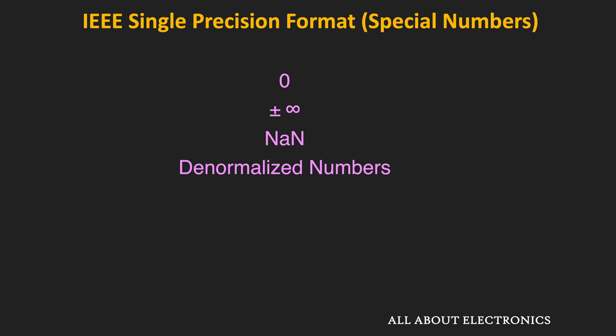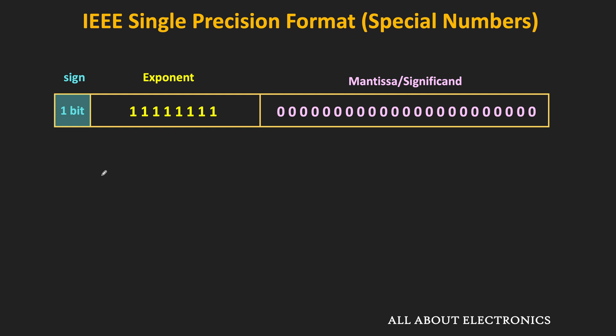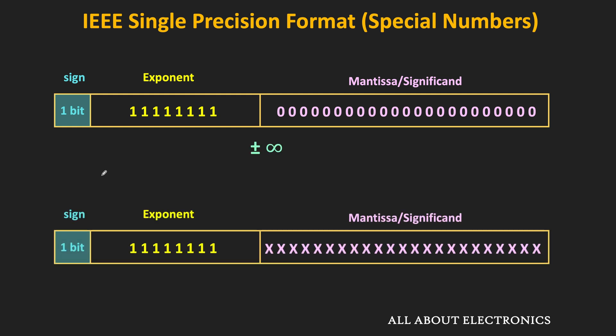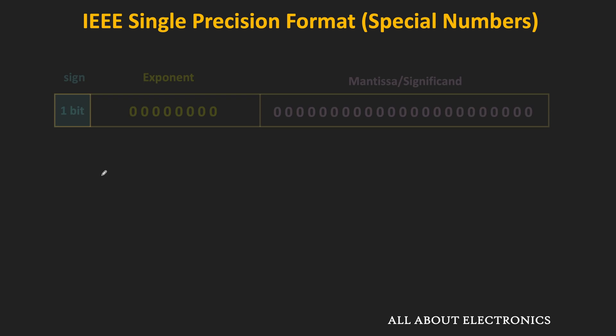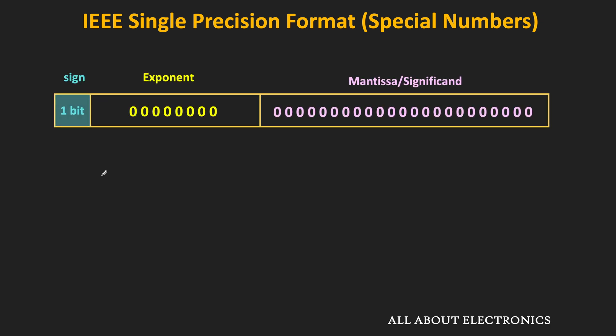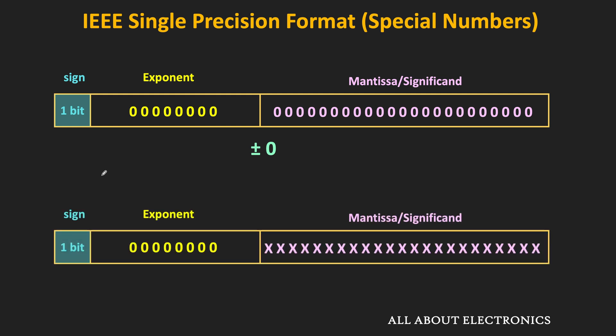These are the special numbers represented using exponent values of all 1s and all 0s. To summarize: when the exponent value is all 1s and the mantissa field is 0, that corresponds to plus or minus infinity; when the mantissa field is non-zero, that corresponds to NaN. When the exponent field is 0 and the mantissa field is also 0, that represents 0. When the exponent field is all 0s and the mantissa field is non-zero, that represents denormalized numbers. For normalized numbers, the exponent value is anything other than all 0s and all 1s. The same rules apply to double precision numbers as well as single precision.